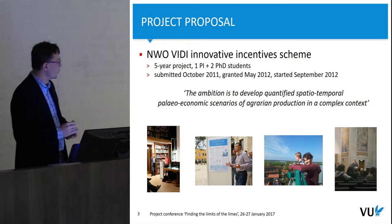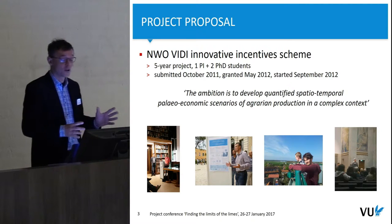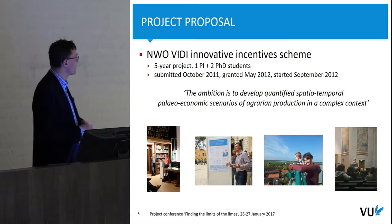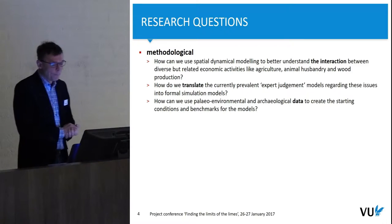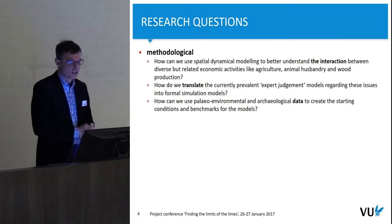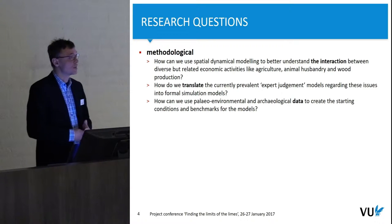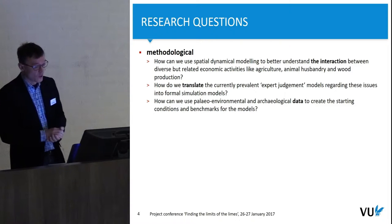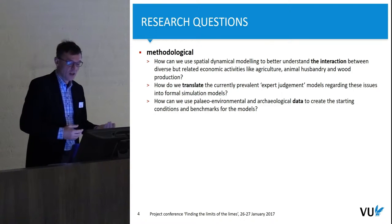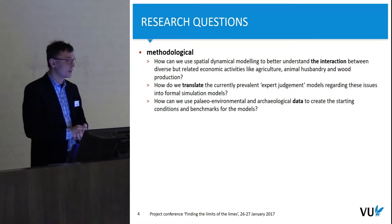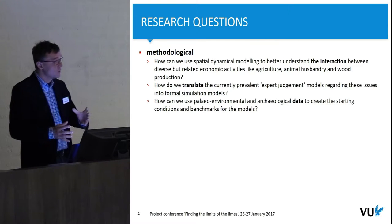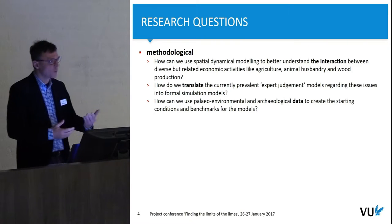We have also traveled around the world presenting this work — there are pictures from Rome and Oslo, and Jamie and Mark standing on a tower looking over the Dutch Limes. The proposal identified two kinds of research questions: first, methodological — how can you use new modeling techniques to understand the interaction between economic activities, specifically defined as agricultural, animal husbandry, and wood production? The last one seemed particularly underexplored. We had expert judgment models, sometimes partly quantified, which needed to be translated into formal simulation models.